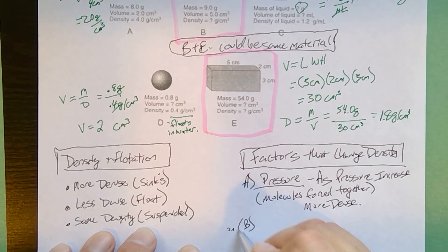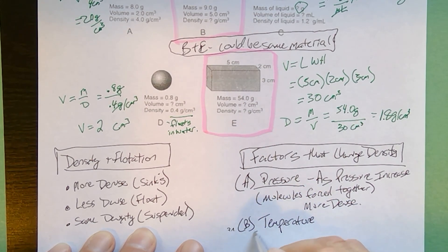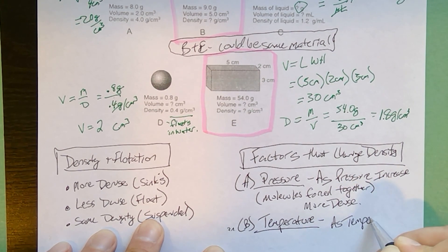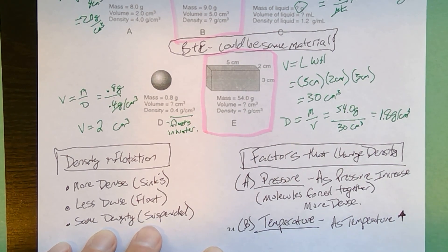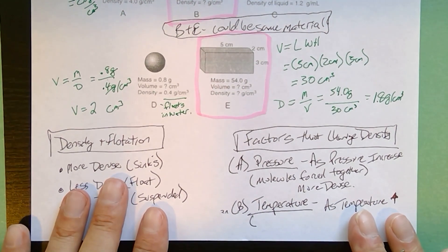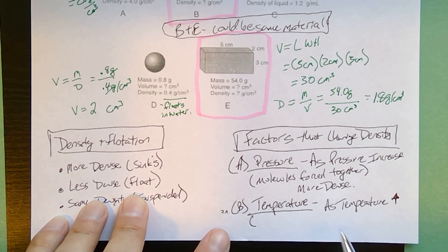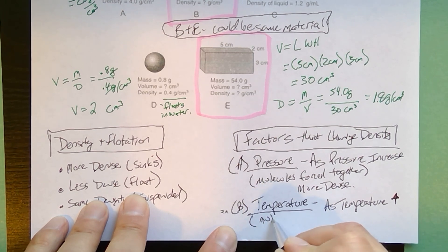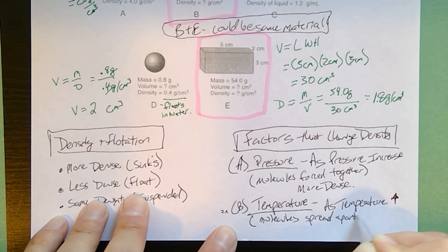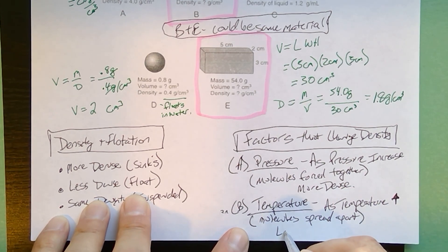Now, for most substances, increasing the temperature will have the opposite effect. As temperature goes up, as you heat an object, the molecules gain energy, they vibrate faster, they have more kinetic energy, and they actually take up more space. They spread out. So by increasing the temperature, the molecules spread apart, that is going to make the material less dense.